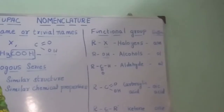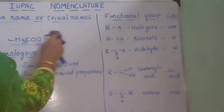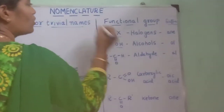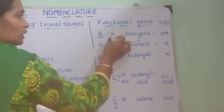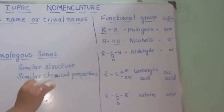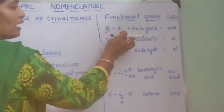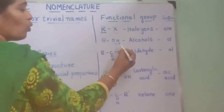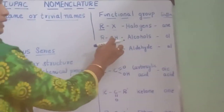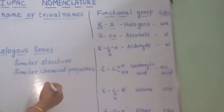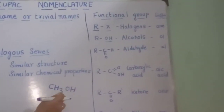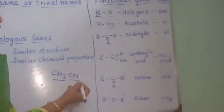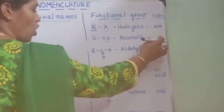R denotes a hydrocarbon chain here. In the group R-X, a hydrocarbon chain is attached to a halogen. Halogens include fluorine, chlorine, bromine, and iodine. For the group R-OH, a hydrocarbon chain is attached to an alcohol group — for example, CH3OH, which is methanol. So when OH is attached to a hydrocarbon chain, the compound is an alcohol, and the suffix will be '-ol', as in methanol.